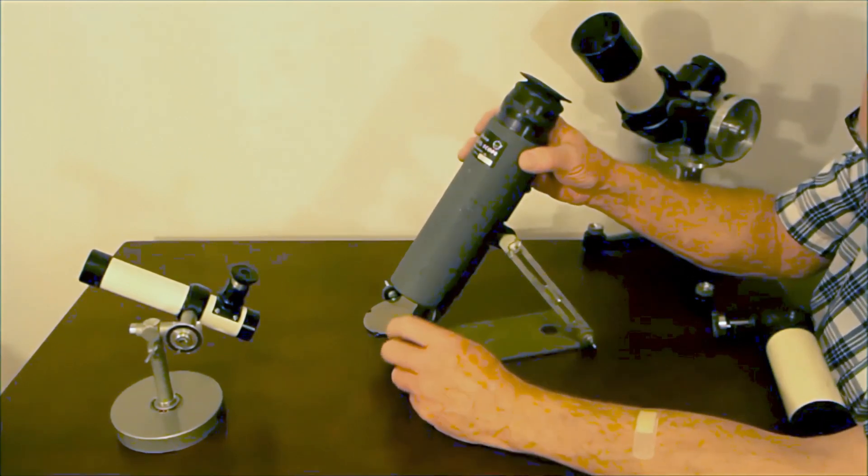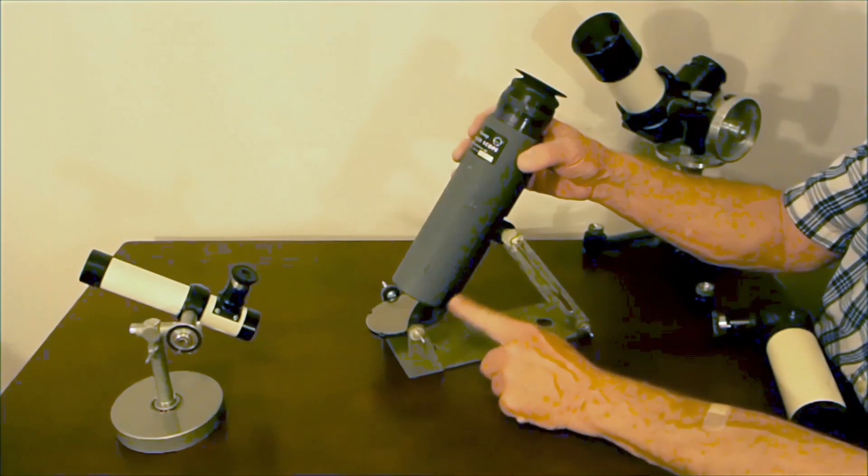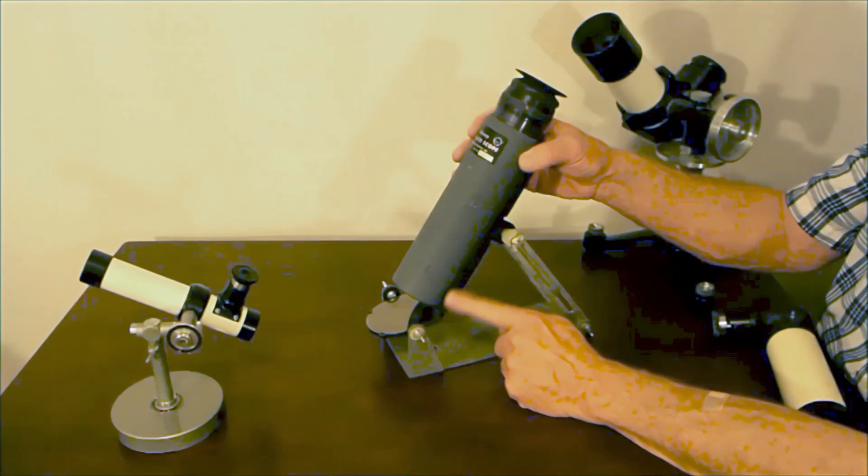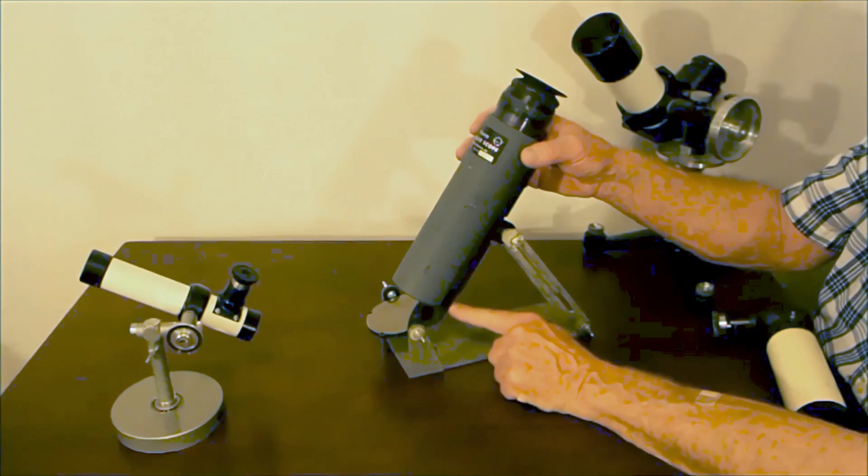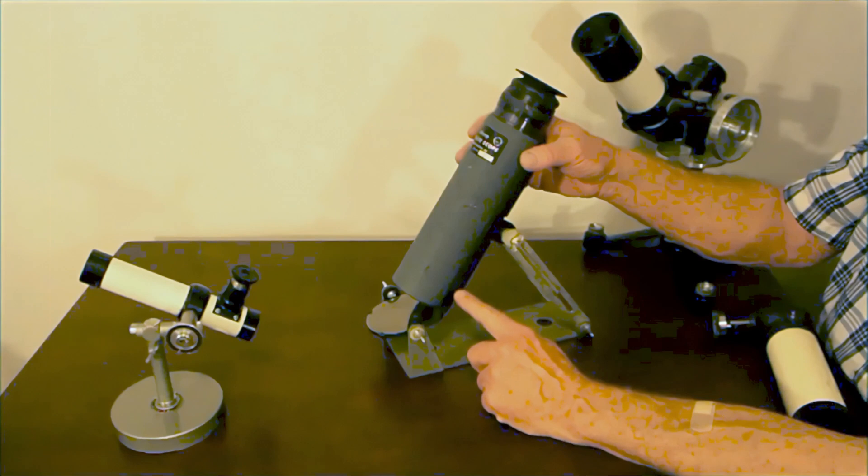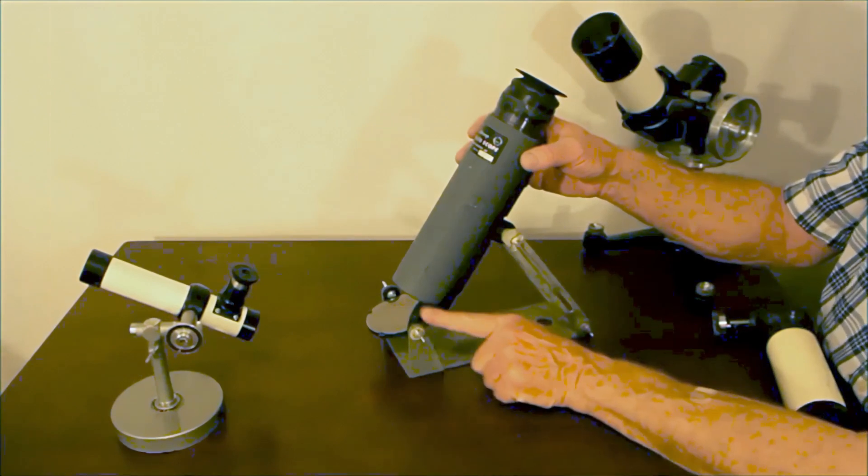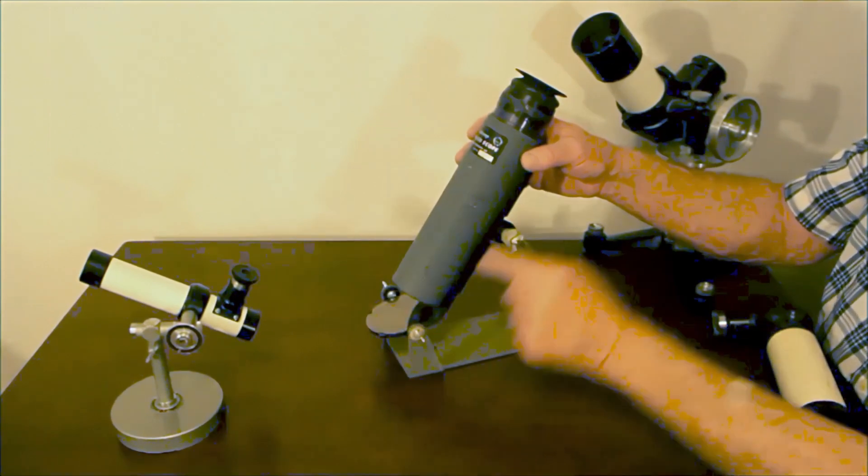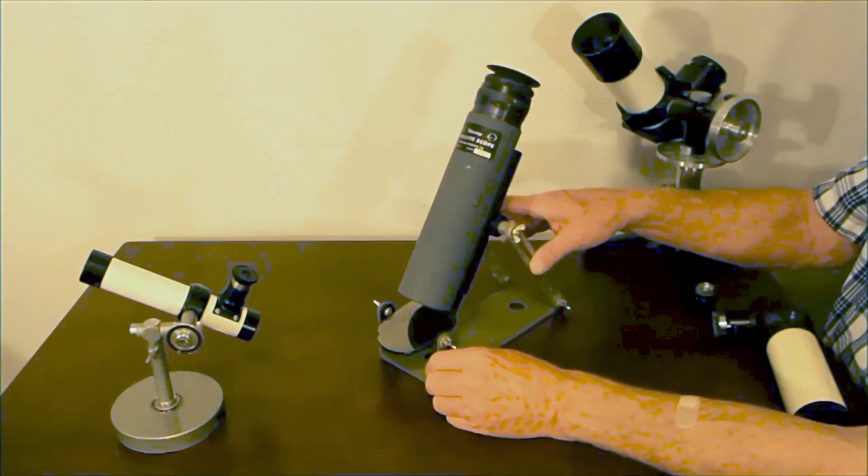And this is not adjustable. In other words, you can't change the angle between the mirror and the telescope, at least not without bending a pretty substantial hunk of metal here. It's not intended that that happened. This is meant to be a 45 degree angle to give you a 90 degree angle of reflection here.